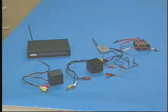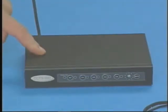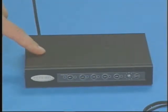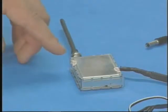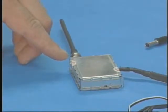Shown here are the basic components needed for the 900 megahertz audio video link. We have the 900 megahertz audio video receiver, the 900 megahertz T2 transmitter with range up to two miles.